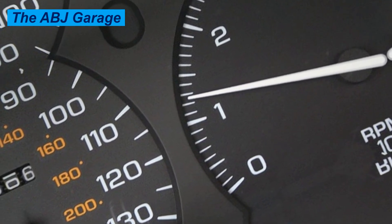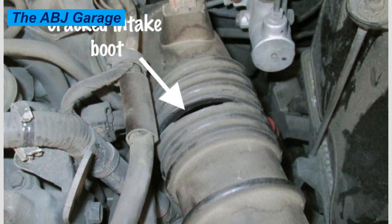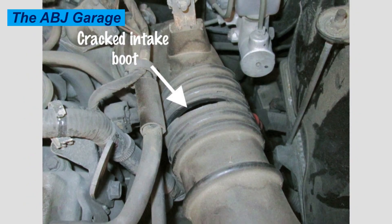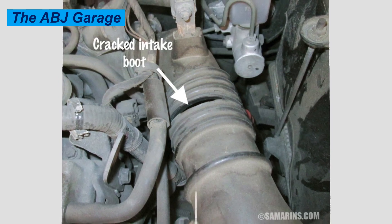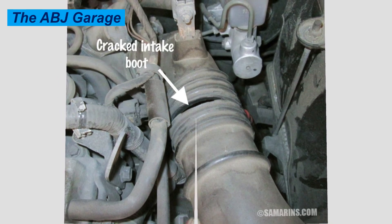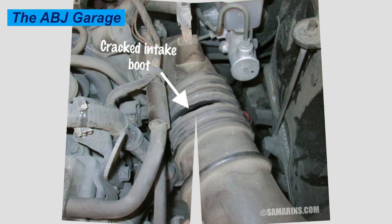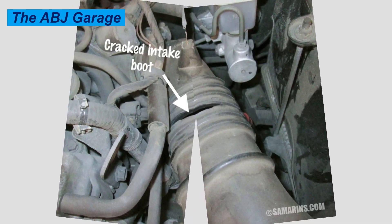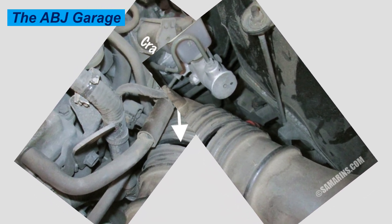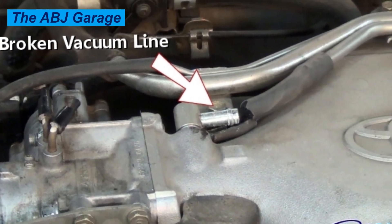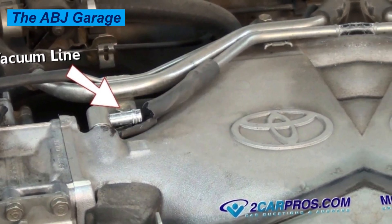Number one is vacuum leak. This is a very common cause. The engine relies on a precise amount of air entering through the throttle body when the throttle is closed. A vacuum leak is an unmetered air leak — air that enters the engine without being measured by the mass airflow meter or the manifold absolute pressure sensor. The ECU commands a specific amount of fuel based on the measured amount of air.